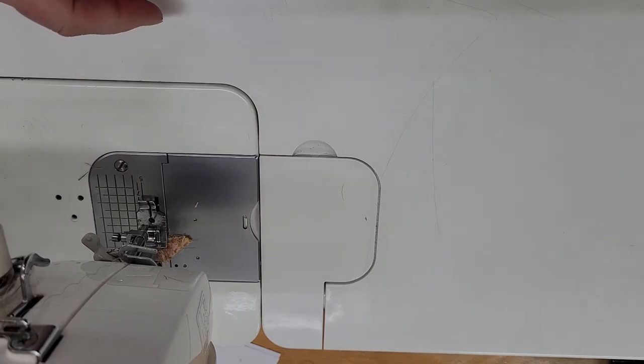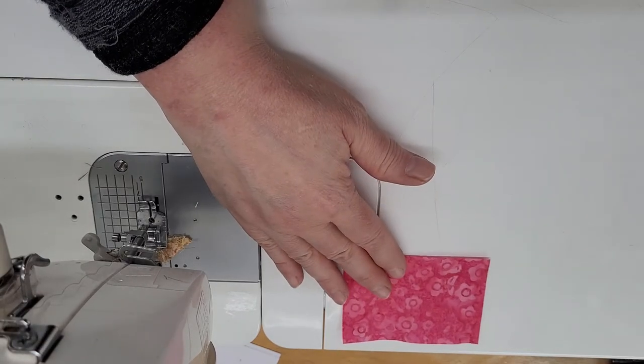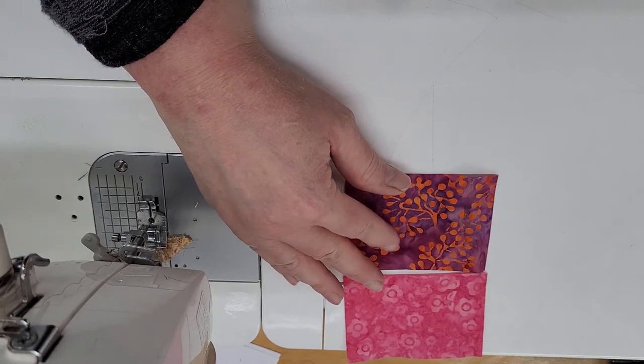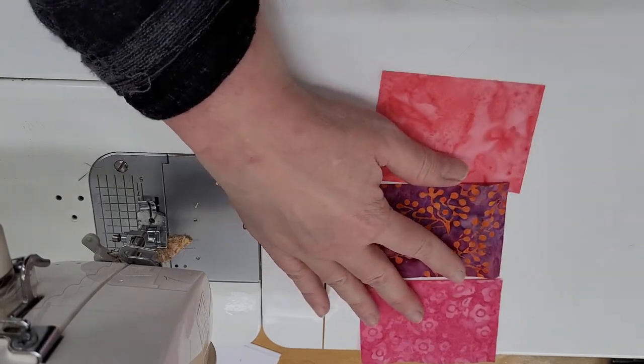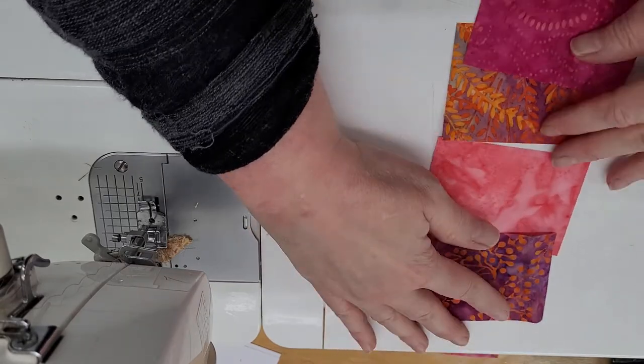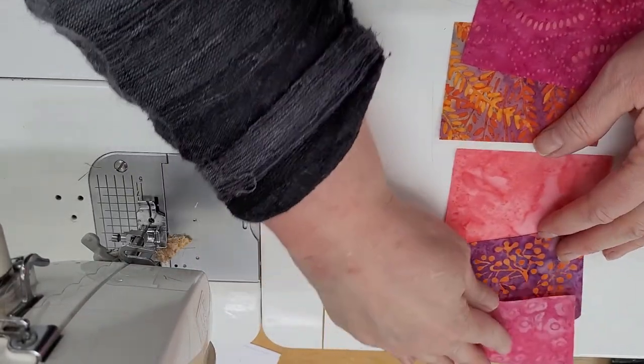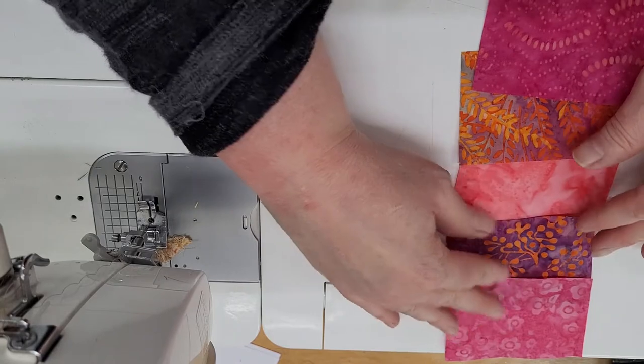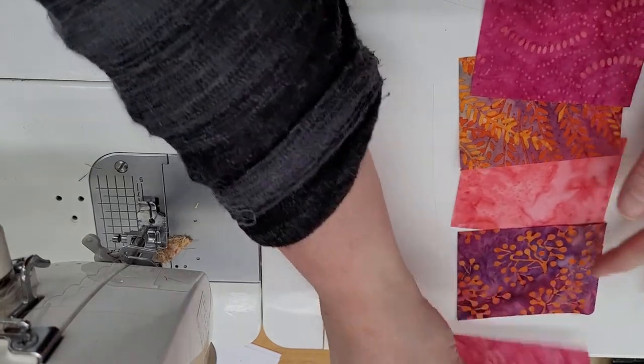I would advise that you lay out what you're going to sew so you know where you're going. So I'm going to lay these all in a row. I'm going to start at the top and sew these together. The beauty of batiks is they don't really have a definite right or wrong side.